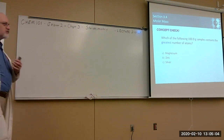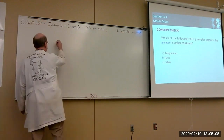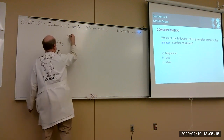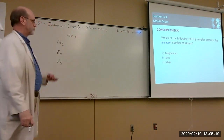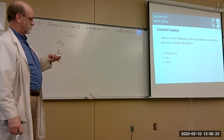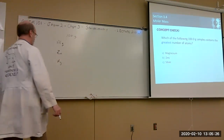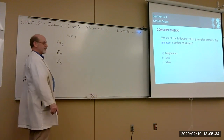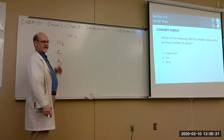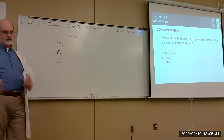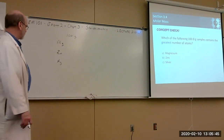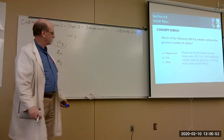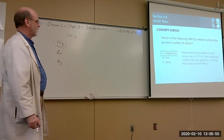If you have 100-gram samples of magnesium, zinc, and silver, which contains the greatest number of atoms? Magnesium — because it has the least molar mass. The lighter atom takes more of them to make up 100 grams.